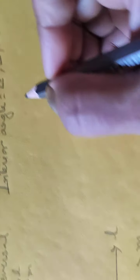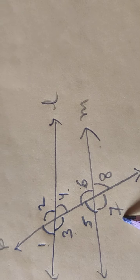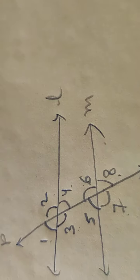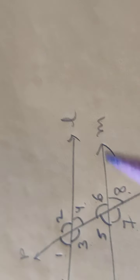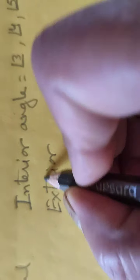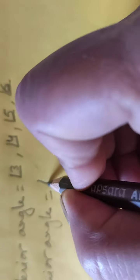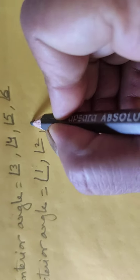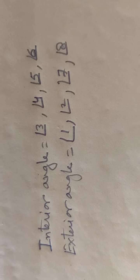Now, if I ask you what are the exterior angles, then: one, two, seven and eight, because they are facing outside. There is no other obstruction here, therefore they are facing outside the figure. So these are the exterior angles: angle one, angle two, angle seven, angle eight.